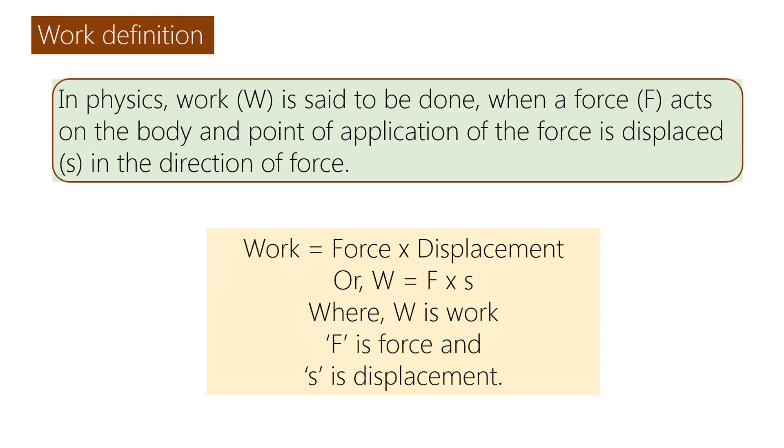Work definition. In physics, work W is said to be done when a force F acts on the body and the point of application of the force is displaced S in the direction of force. Work equals force times displacement, or W equals F times S, where W is work, F is force, and S is displacement.